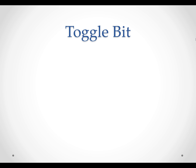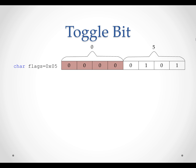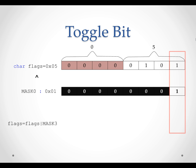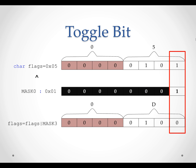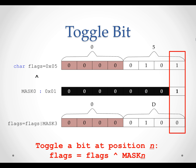Toggle a bit means change a bit from 0 to 1, or 1 to 0. Suppose we want to toggle bit 0. Originally bit 0 has a value of 1, indicating that we have a durian. To toggle bit 0, we can change the value to 0. All other bits shall remain unchanged. To do so, we can bitwise XOR with mask 0. 1 XOR 1 equals 0. 0 XOR 0 equals 0. The result of the bitwise XOR operation is that bit 0 is toggled and other bits remain unchanged. Conclusion: to toggle a bit at position N, bitwise XOR the flags with mask N.